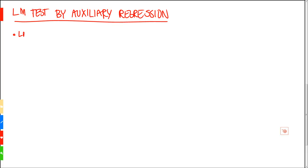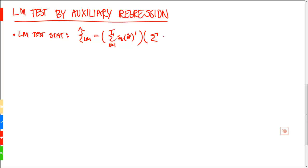Recall from the last video that the LM test statistic is given by ψ̂_LM, equal to the sum of the individual scores evaluated at the restricted parameters. This is a sum from t=1 to T, and then we have the outer product of the scores, like this sum from t=1 to T inverse, multiplied by the sum from t=1 to T of the individual scores.